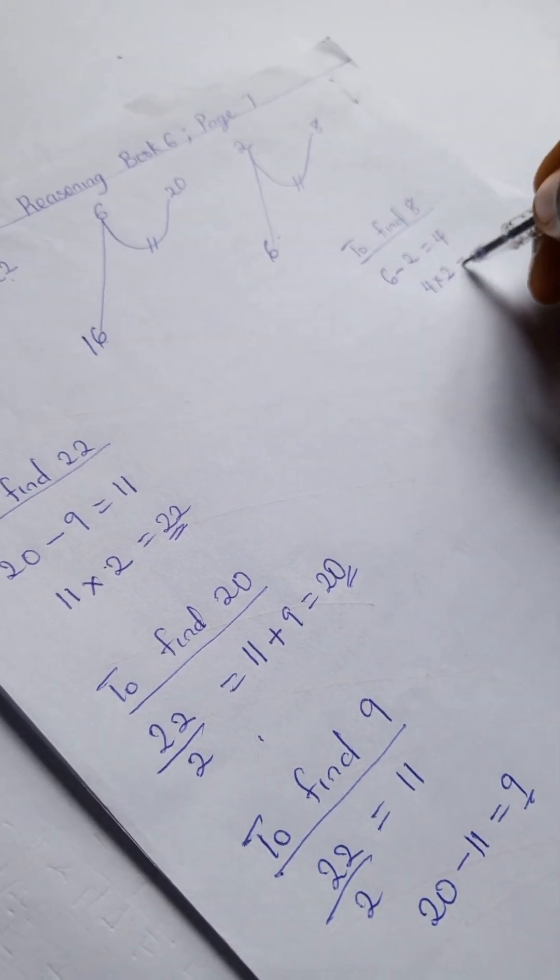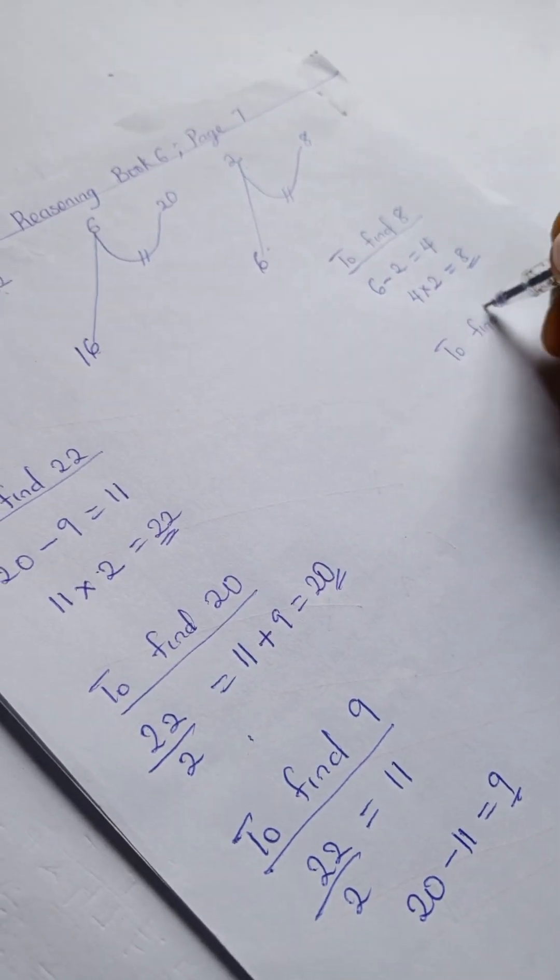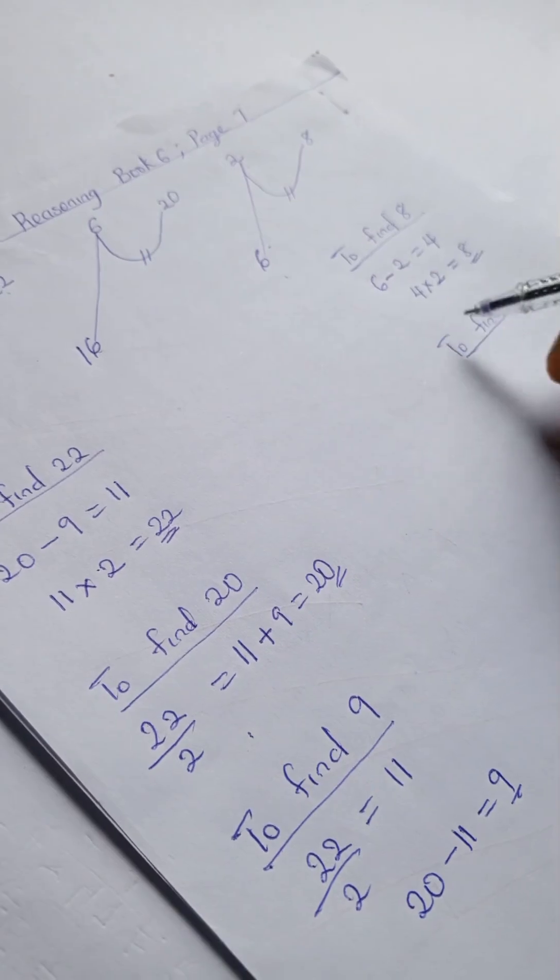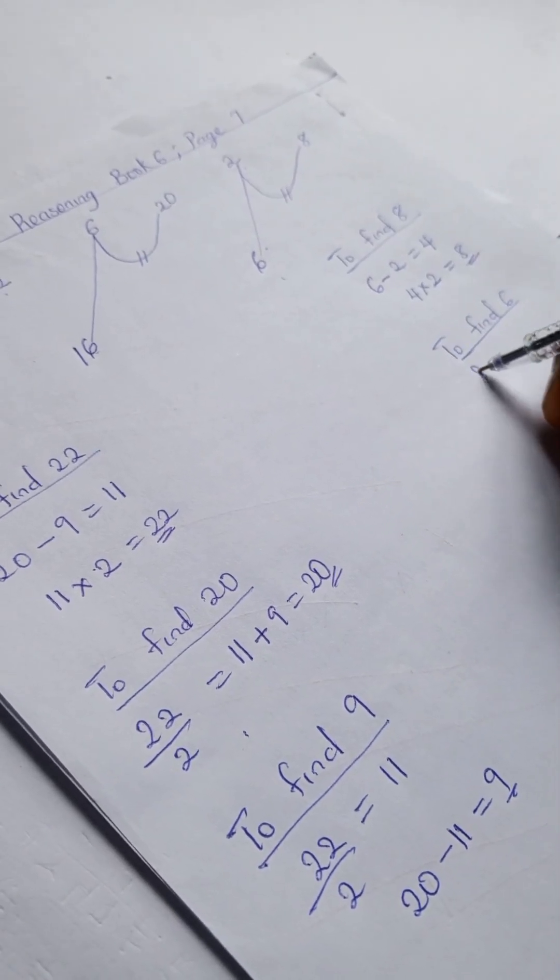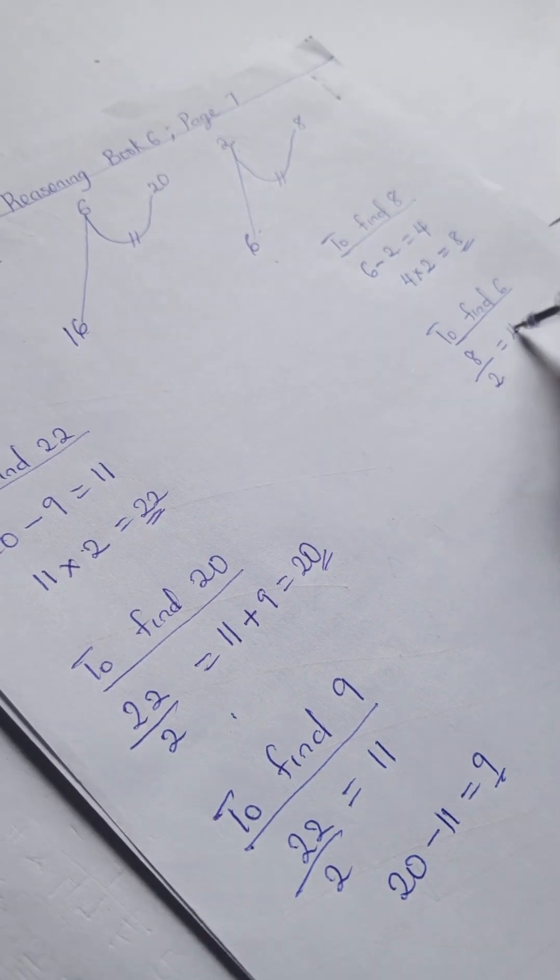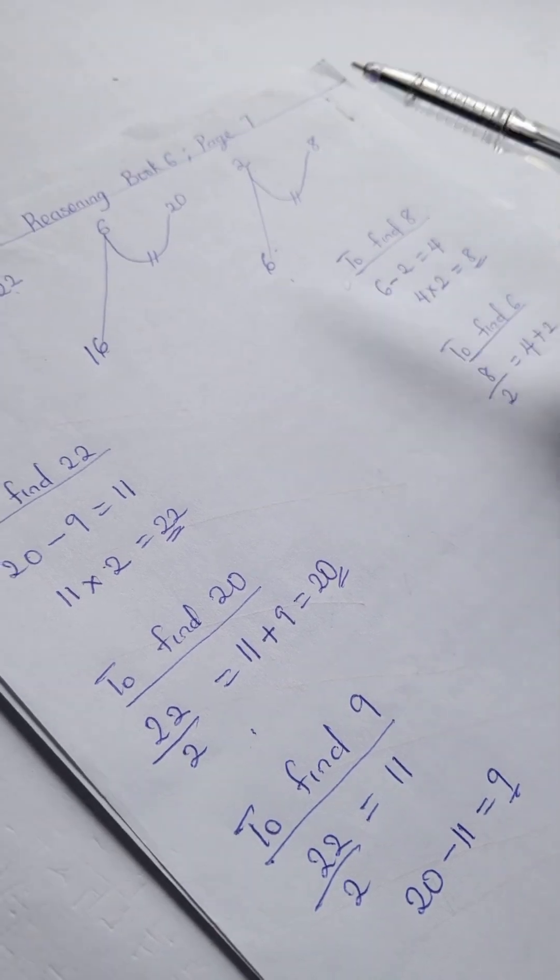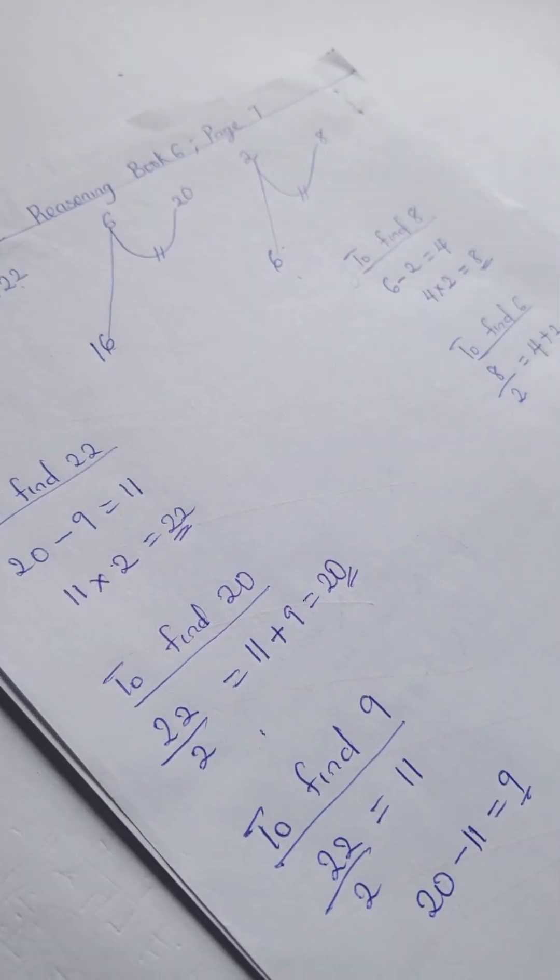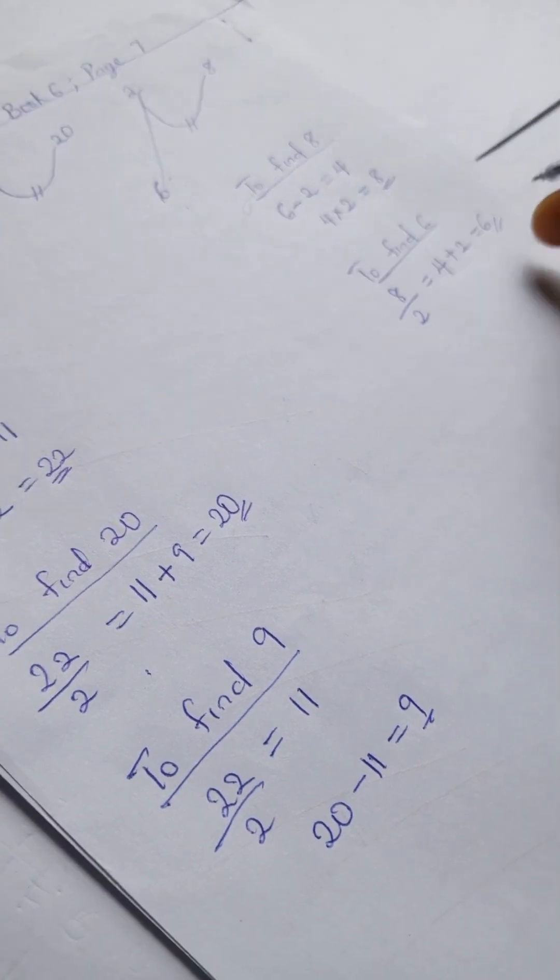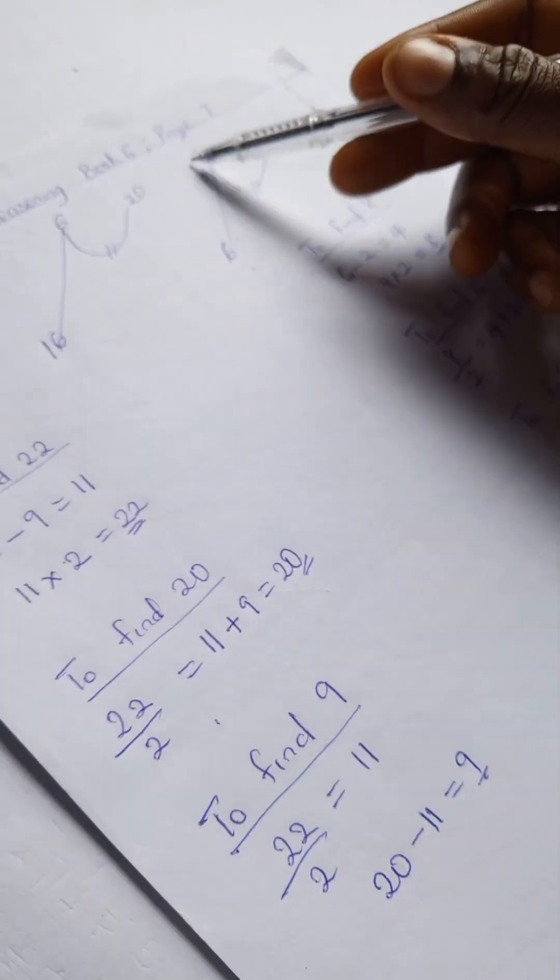And to find 6, we're going to have 8 divided by our imaginary 2, which would give us 4. And 4 plus 2, this 2 here, we have our 6. And to find this 2, 6 minus 4, we have our 2.